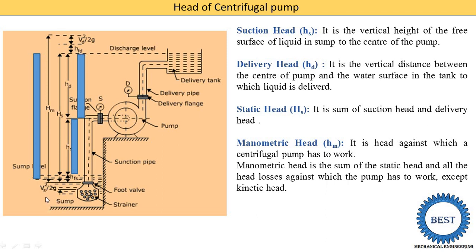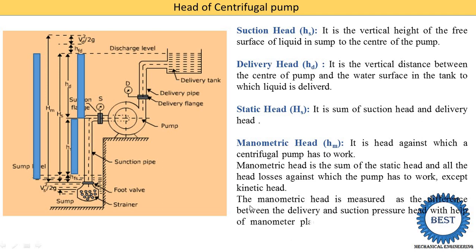Another loss is due to velocity in the suction pipe, VS. The velocity head loss in the suction pipe is VS squared by 2g. Similarly, in the delivery pipe the velocity is VD, and the head loss due to that velocity is VD squared by 2g. These equations will be discussed later; first we see the various methods.